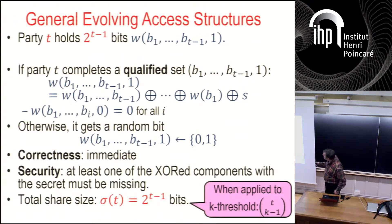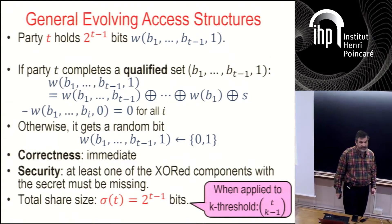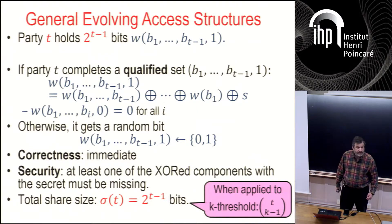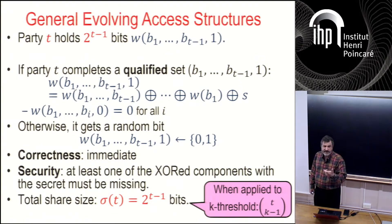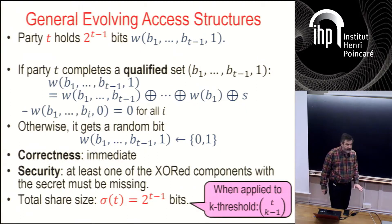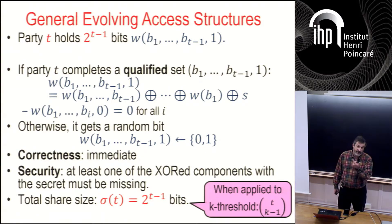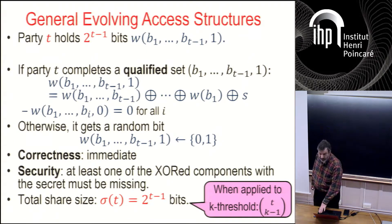For threshold, the number of qualified sets in which party t can participate or complete is something like (t choose k-1). So you need to store a bit only for sets still unqualified — at most this many. For threshold this gives something like t^k, which is better than 2^(t-1) but still not what we want. We want something closer to log t.